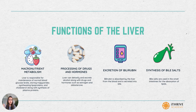The third macronutrient — the liver also helps in protein metabolism. The liver can convert amino acids to glucose so that the amino acids can be used for energy purposes. So yes, protein can also be used for energy purposes and this happens with a functioning liver.